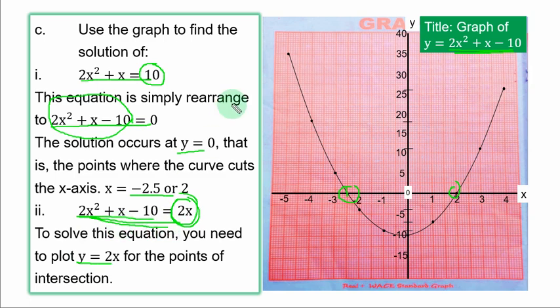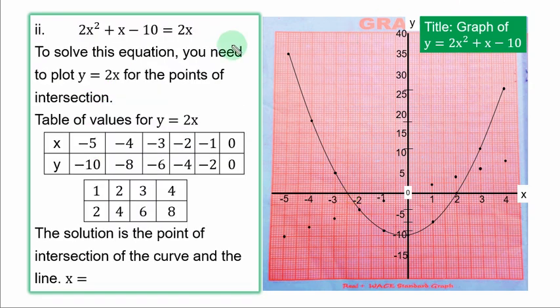So that after that straight line is plotted, the point of intersection of the curve and the line gives solution to this equation. Let us add the line to it. On part C, this is the table of values for the line. So you plot it directly.